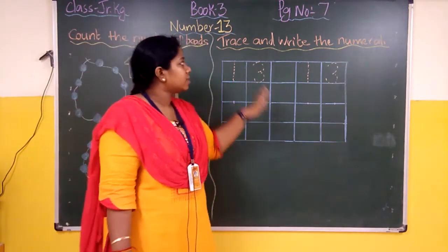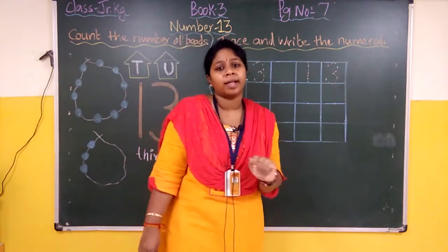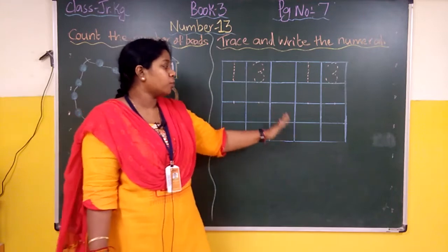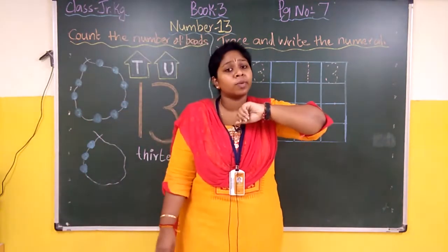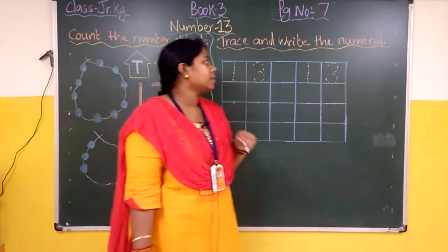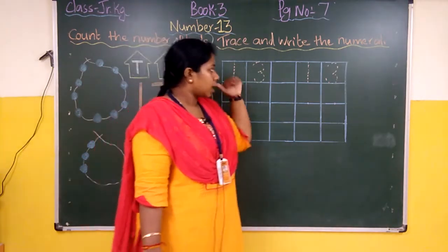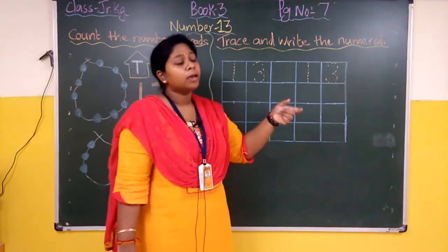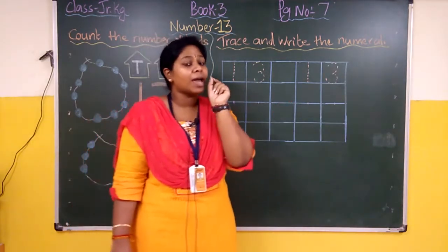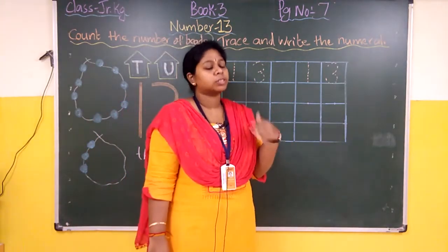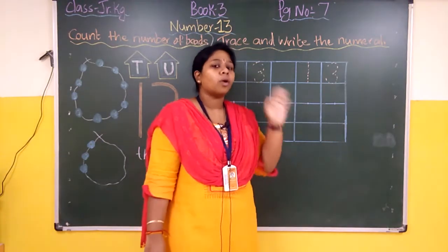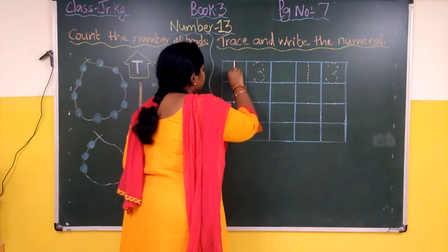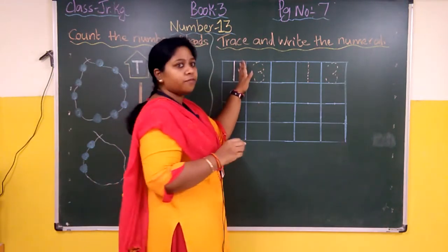Good. Coming to the next part, that is trace and write the numeral. Hame kya karna hai? We have to trace, then we have to write the numeral. Which numeral? Which number? 13. Right. 1, 3, 13. So coming again to the tracing part. That blue line, you will be given grey dots and tracing dots, so you will trace it on the dots. So one go aapko pata hai hena. Yes. It is a small standing line. You have to cover the first box.